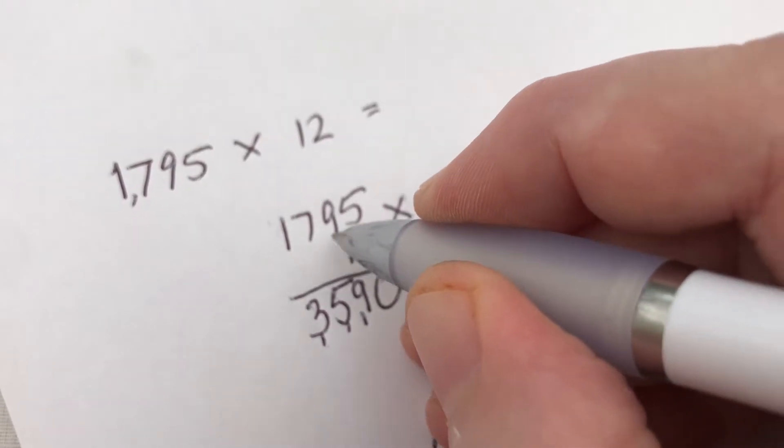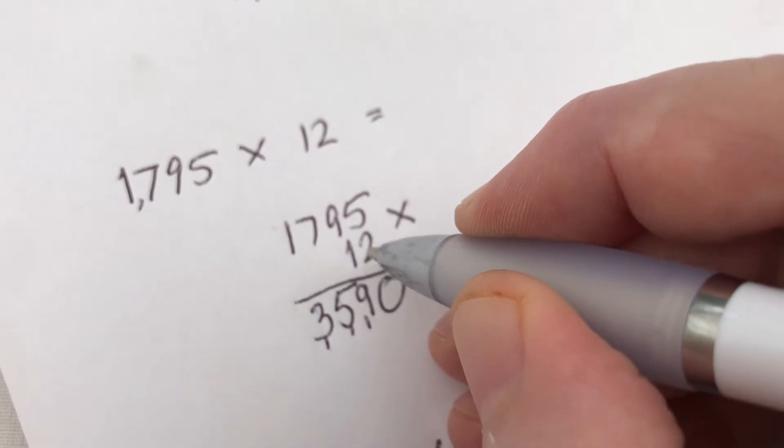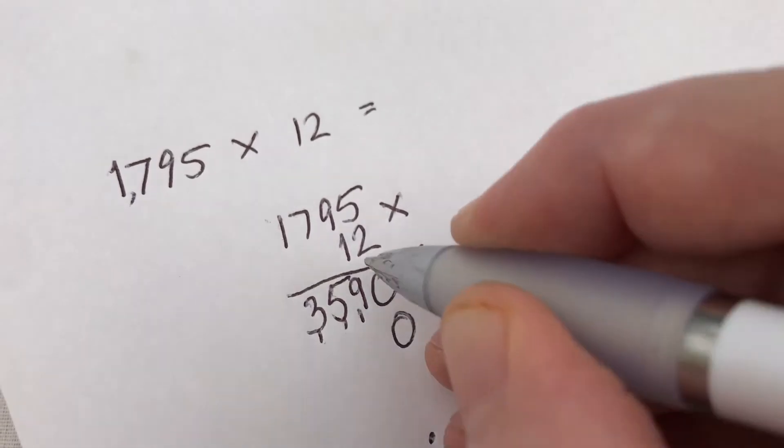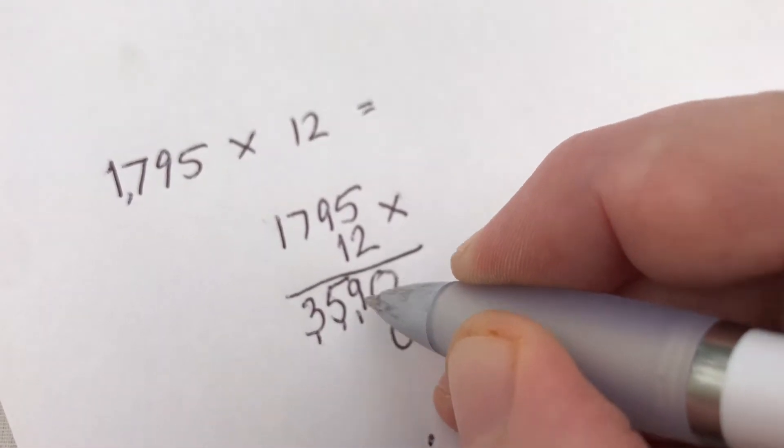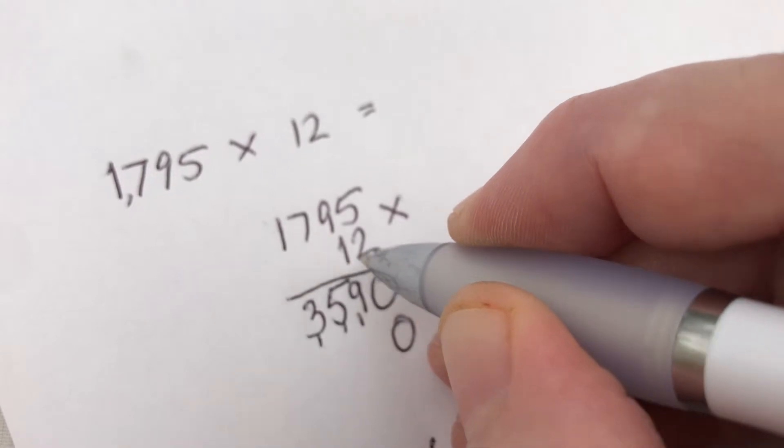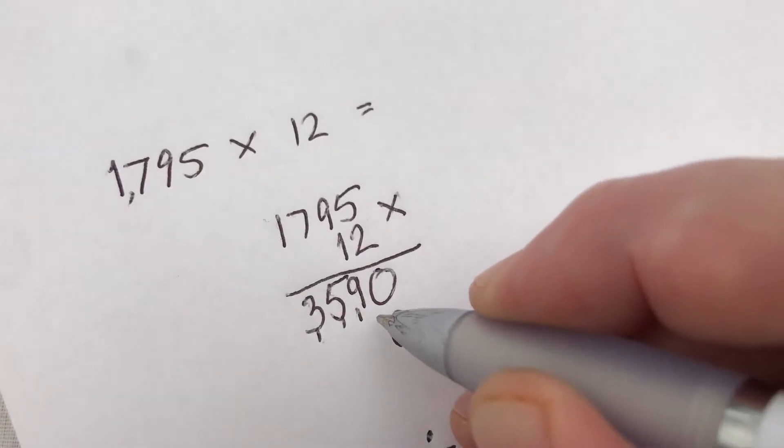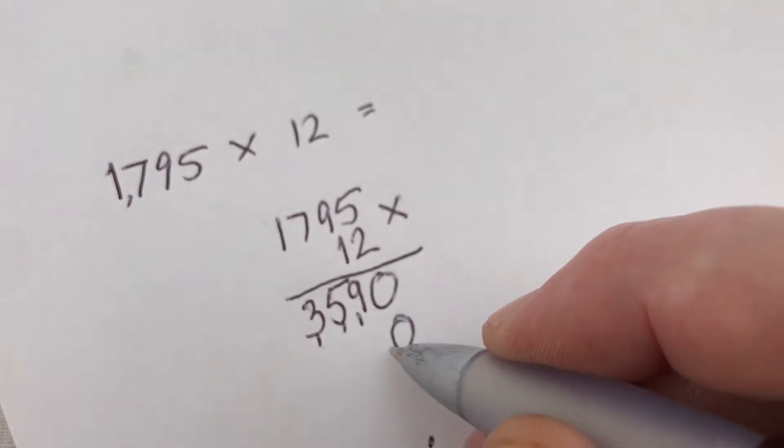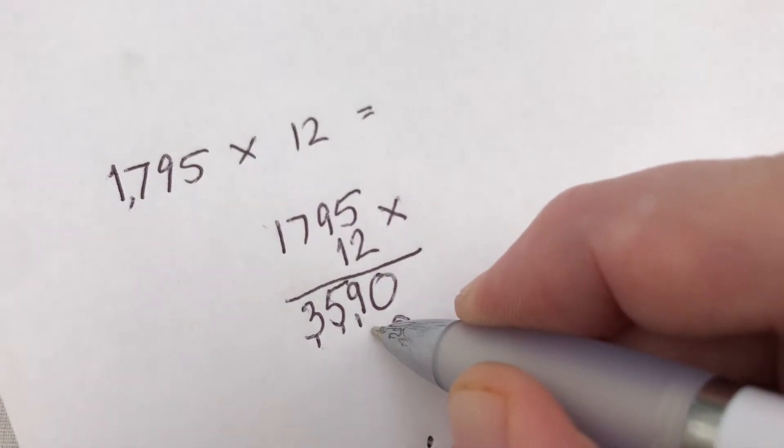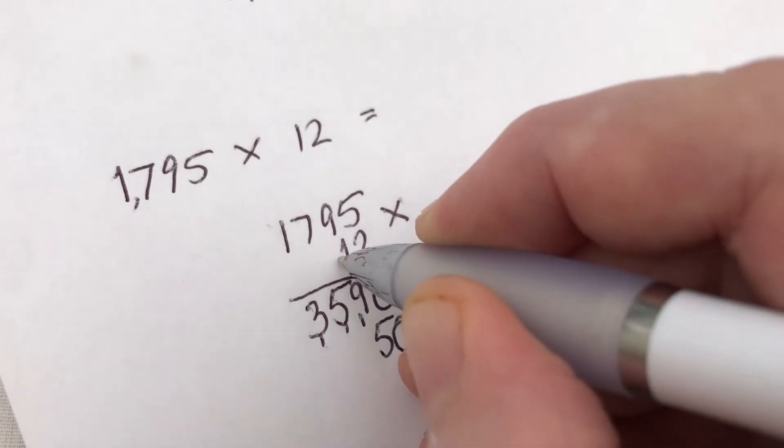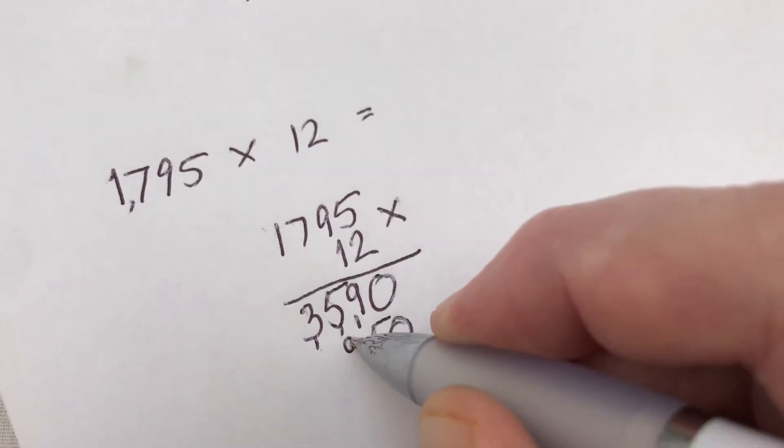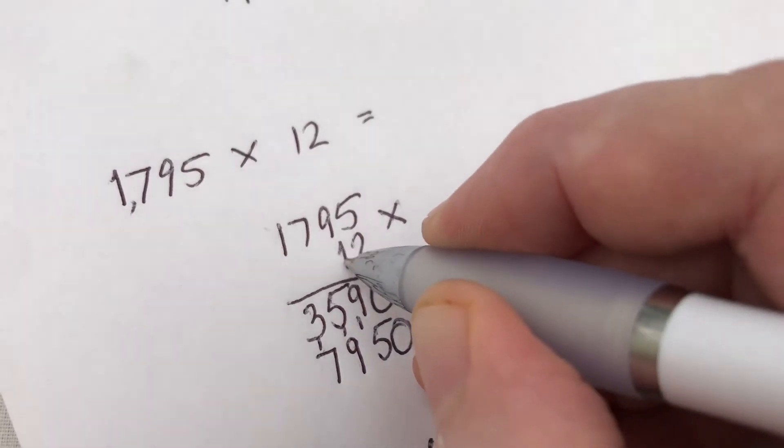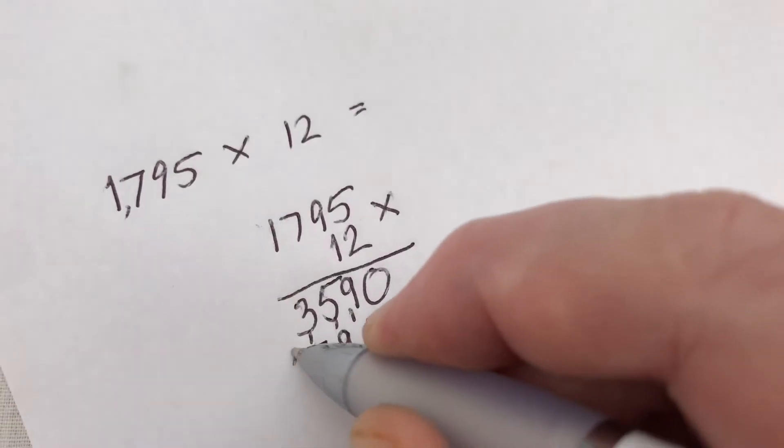But now we've got the tens unit, so the 10 of the 12. So again, there's no unit there because we've already done the units, the 2. Now we do the 1. So we start with a 0 to take us into the tens units. 1 times 5 is 5. 1 times 9 is 9. 1 times 7 is 7. 1 times 1 is 1.